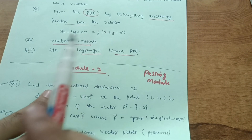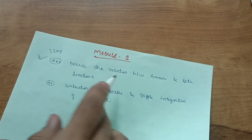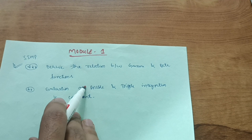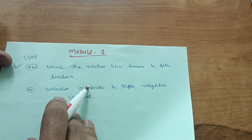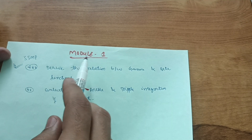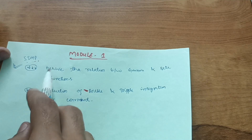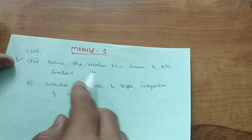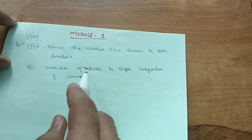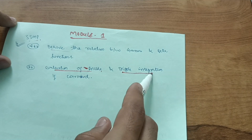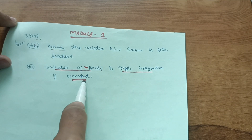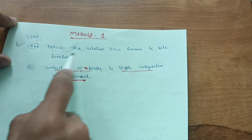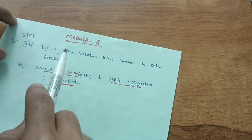Module 1 involves multiple integrals — double and triple integration — which requires strong integration skills. If you are weak in integral calculus, focus on just one derivation from Module 1: derive the relation between beta and gamma functions. This is a definite question in the examination. If you are comfortable with double and triple integration, go through those evaluations as well; otherwise, leave that part and focus only on the beta-gamma relation.